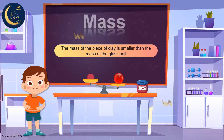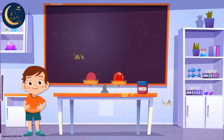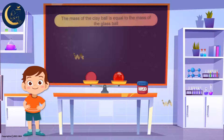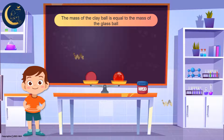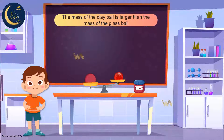So, mass is a property of matter. However, what would happen if I added more clay to the clay ball? Notice that now the two sides of the scale are the same, which means that the mass of the clay ball is equal to the mass of the glass ball. What if I added even more clay? The clay ball's mass is now larger than the glass ball's mass.